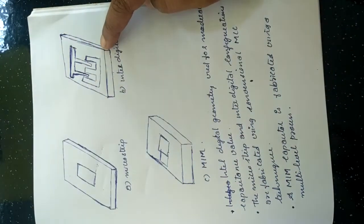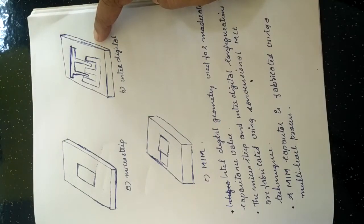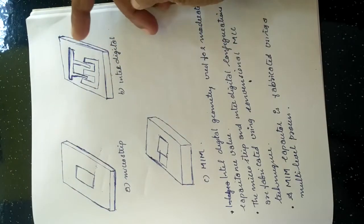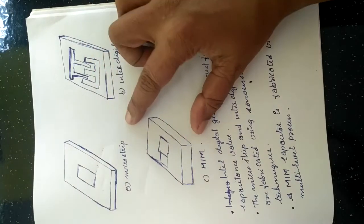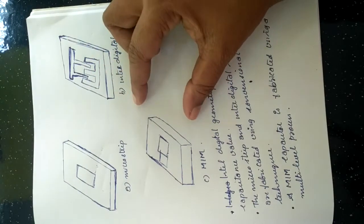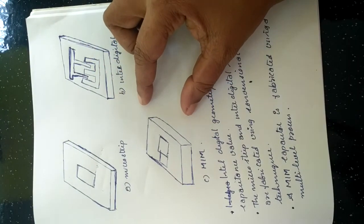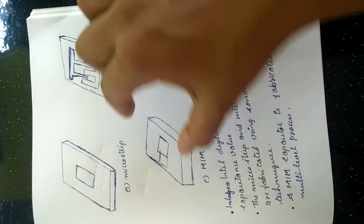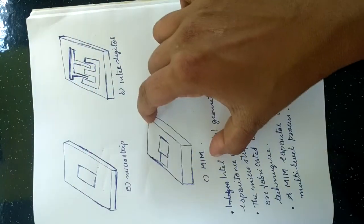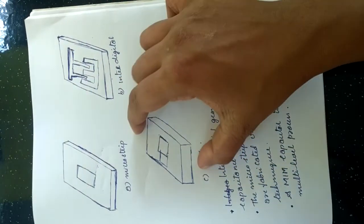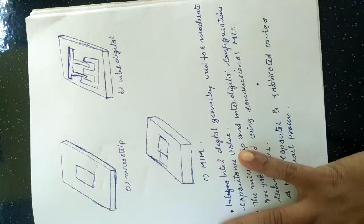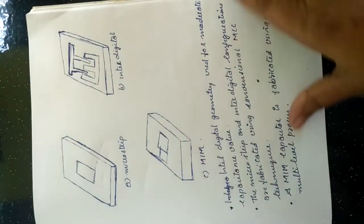Both the microstrip and interdigital structure configurations are fabricated using conventional MIC techniques. In the case of MIM — metal-insulator-metal capacitors — this is fabricated using a multi-level process. This is all about our lambda element capacitor.